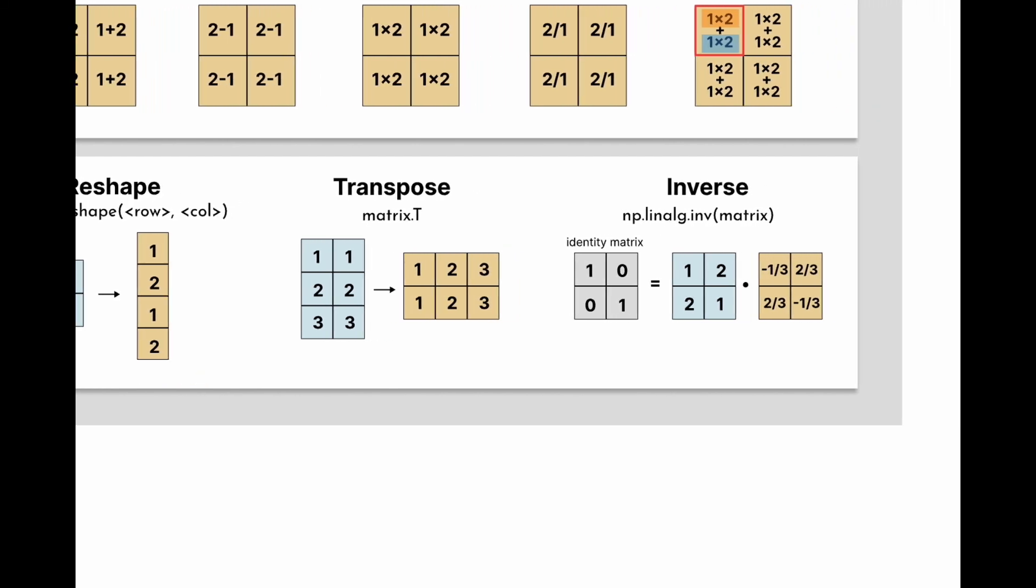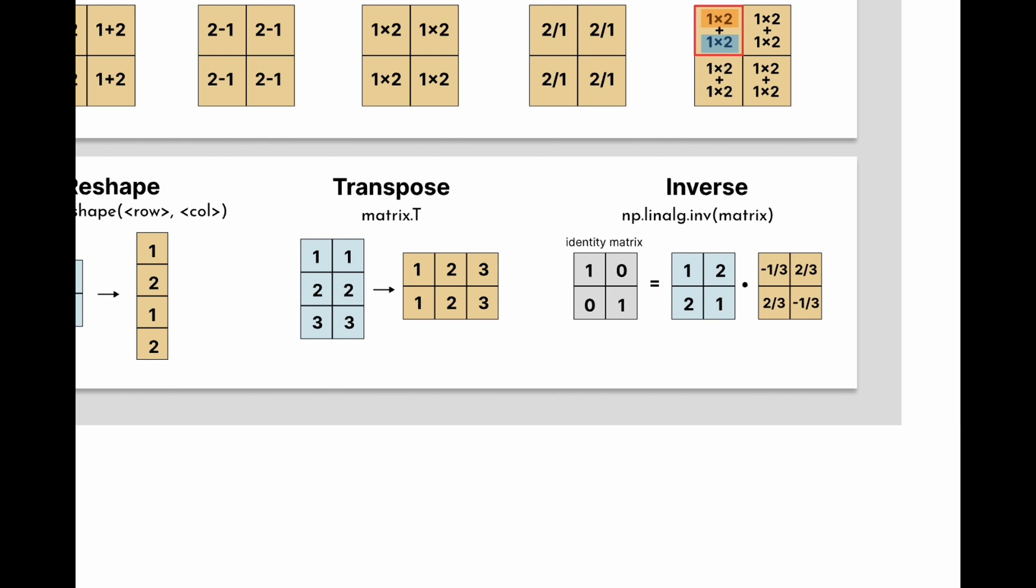Transpose swaps the rows and columns of the matrix, so in this example a 3 by 2 matrix changes into a 2 by 3 matrix. To transpose a matrix, we simply apply .T to the matrix.